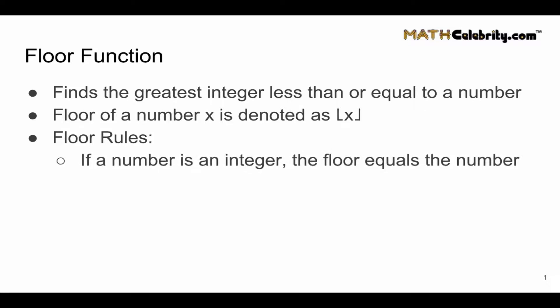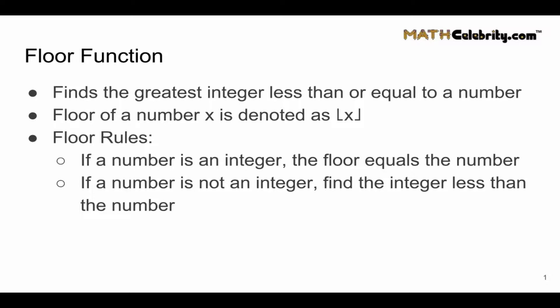First you check to see if a number is an integer, and if they're asking for the floor of an integer, the floor just equals that number. If it's not an integer, you're going to find the integer less than the number, so the closest integer less than the number.